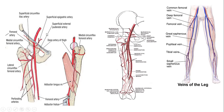What is the mid inguinal point? The mid inguinal point is the point taken midway between the anterior superior iliac spine and the pubic symphysis. It is different from the midpoint of the inguinal ligament, which is the midpoint taken in the middle of the inguinal ligament between its attachments at the anterior superior iliac spine and pubic tubercle.